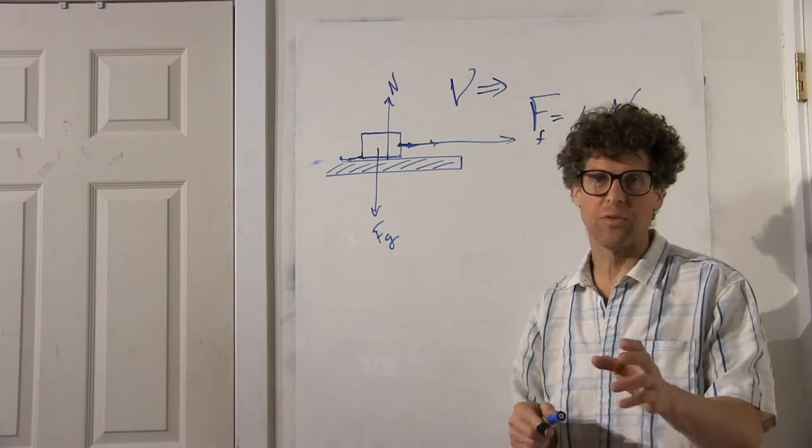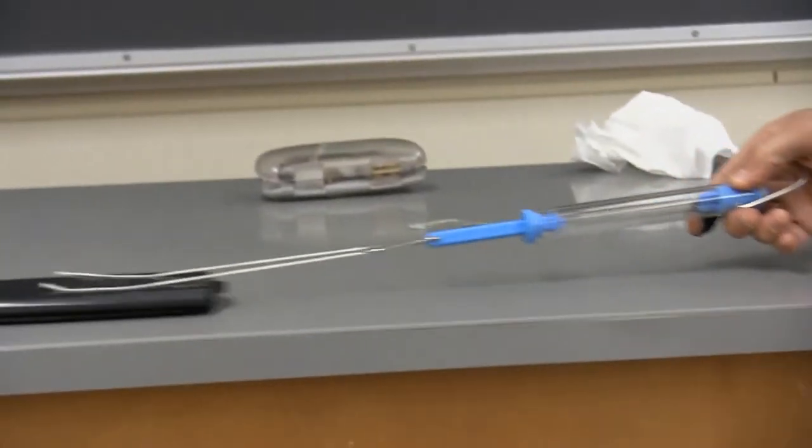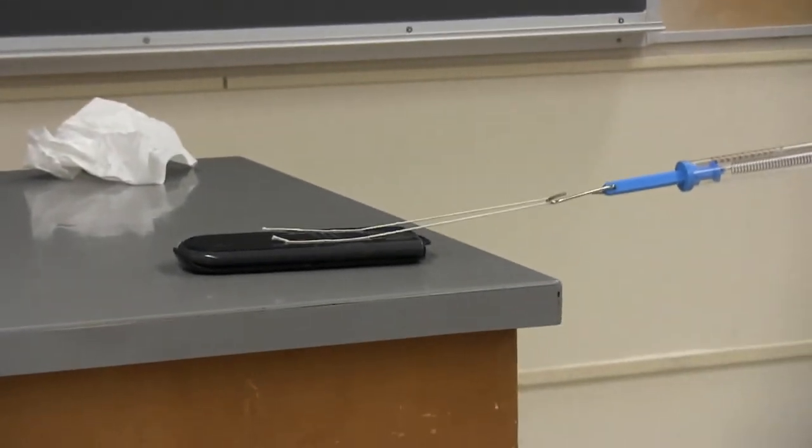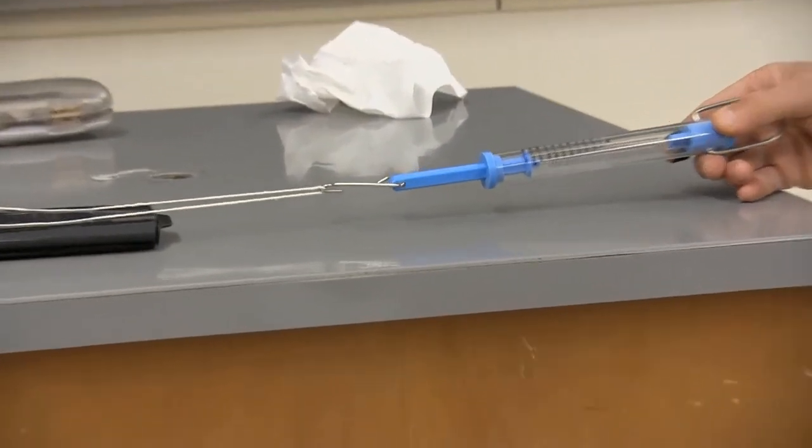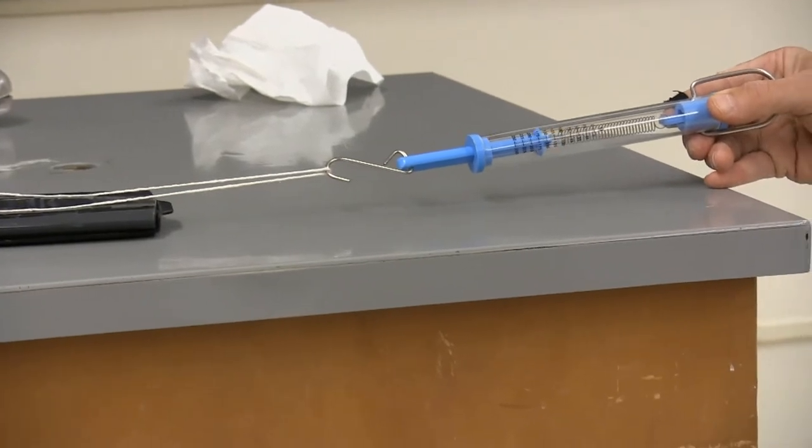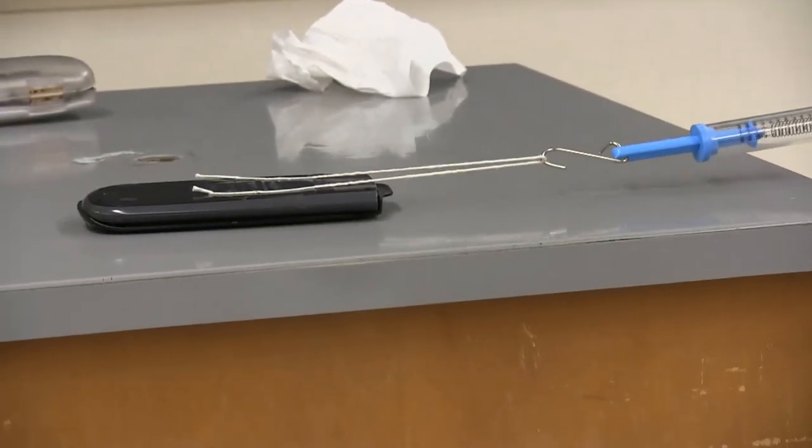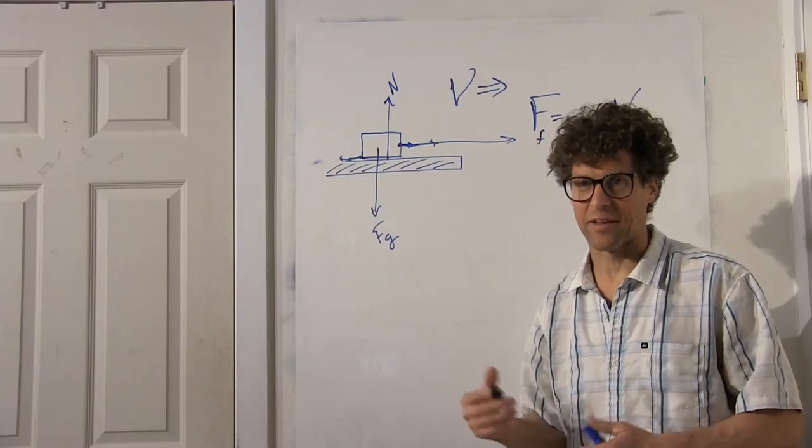The oscillations you see are because once the static friction is broken, the friction drops to the dynamic coefficient of friction, causing the calculator to accelerate forward until it stops again. And the coefficient of friction increases once again to static.